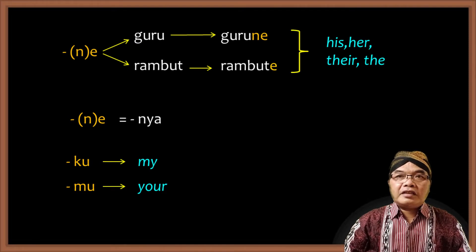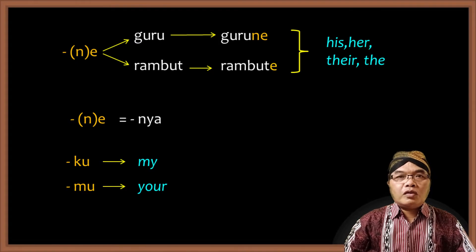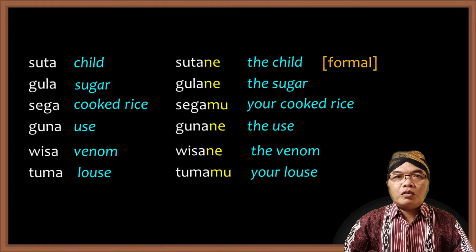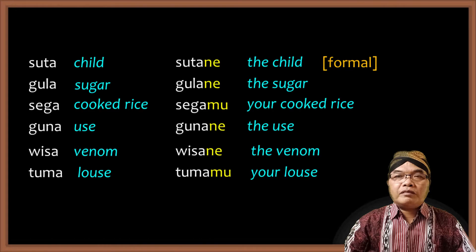For example: SUTO becomes SUTANE, GULO becomes GULANE, SEGO becomes SEGAMU, GUNO becomes GUNANE, WISO becomes WISANE, TUMO becomes TUMAMU.